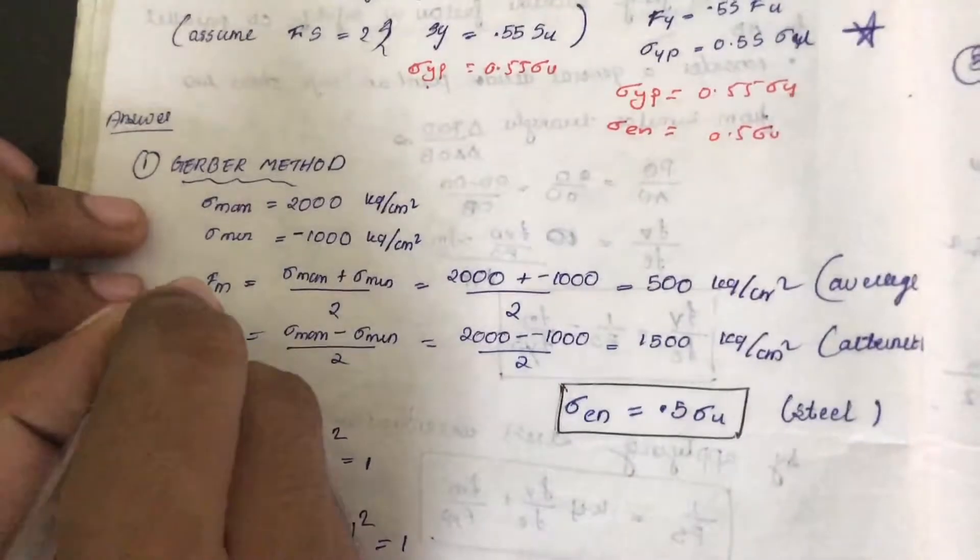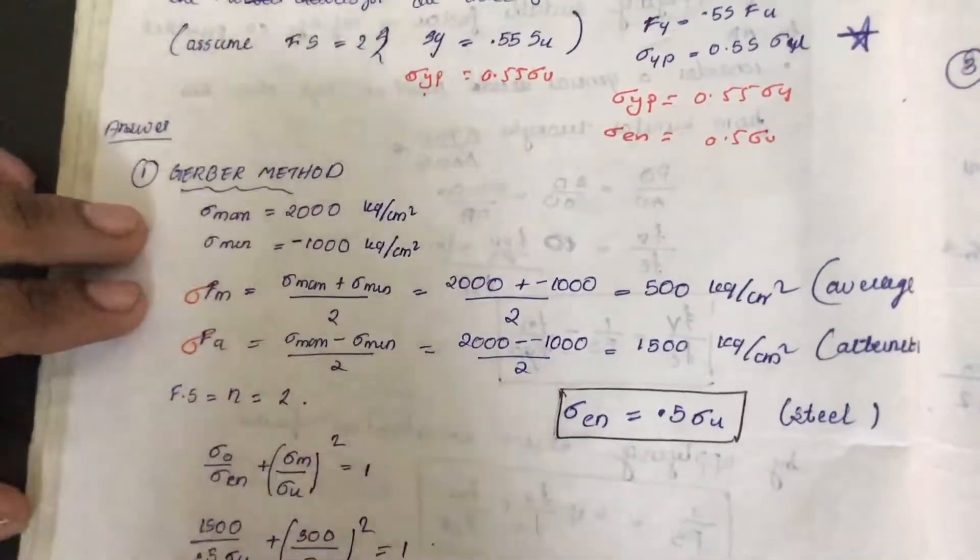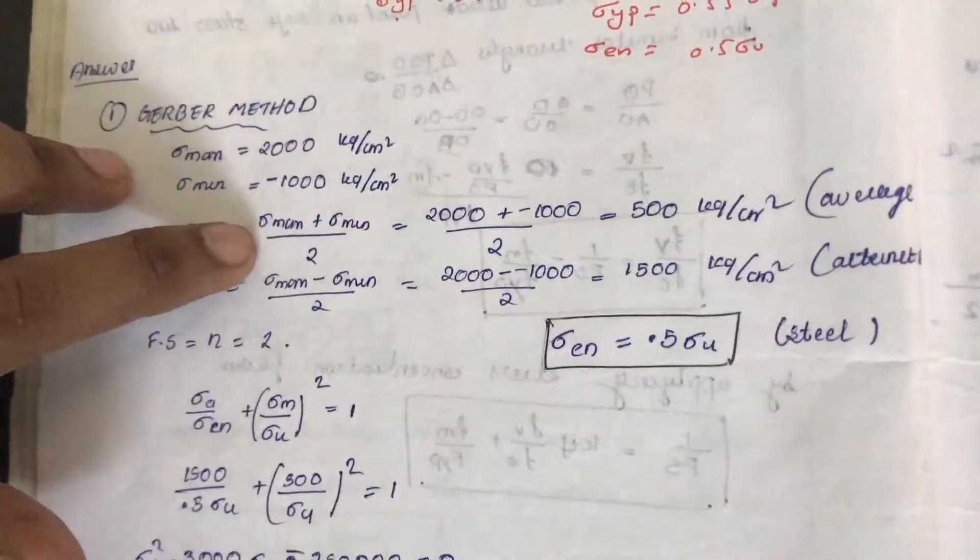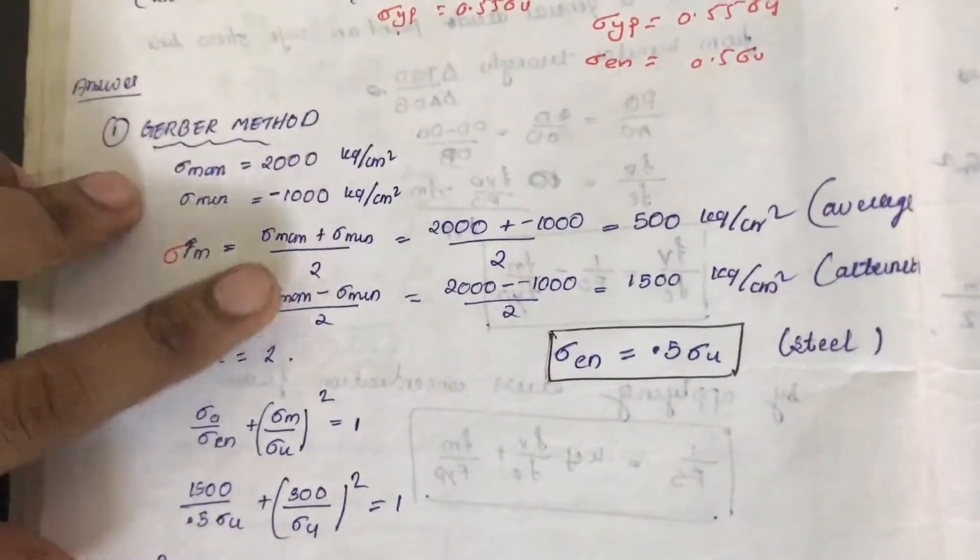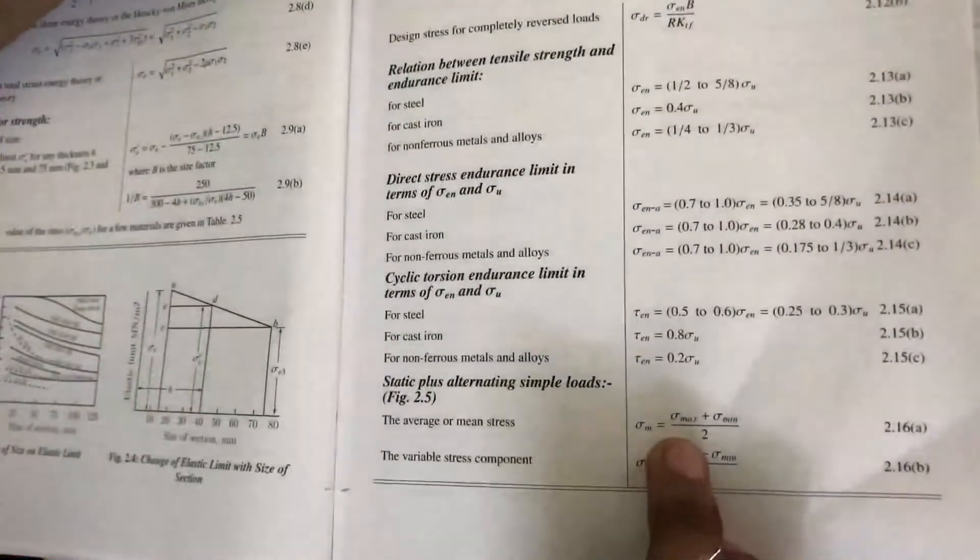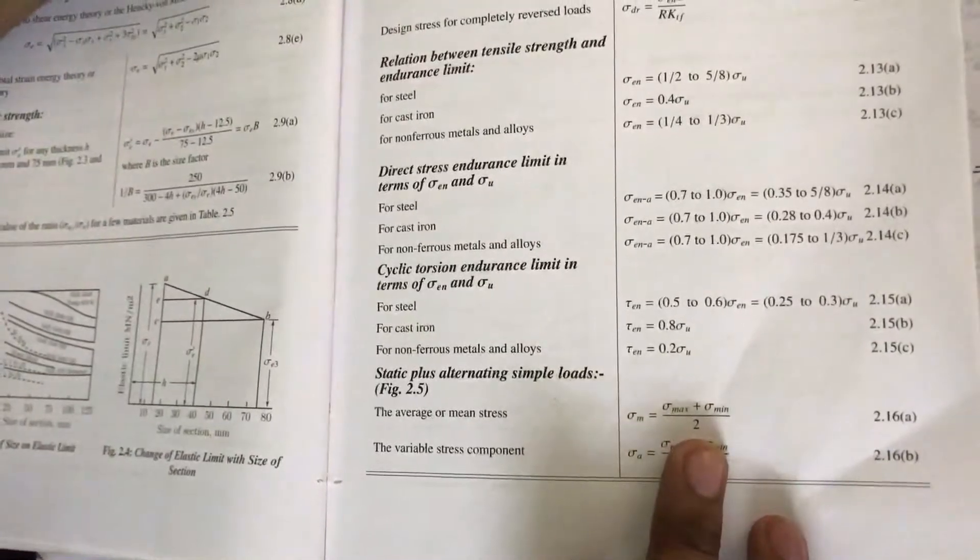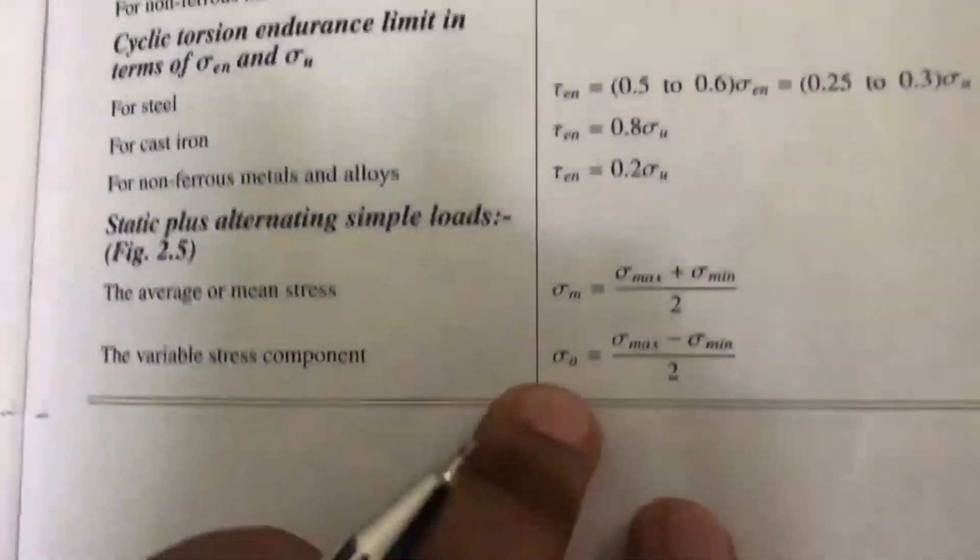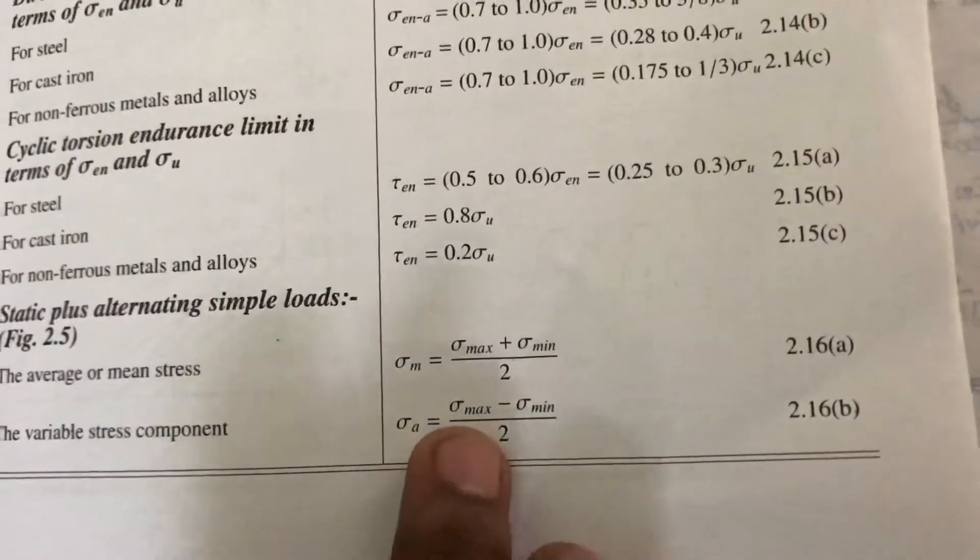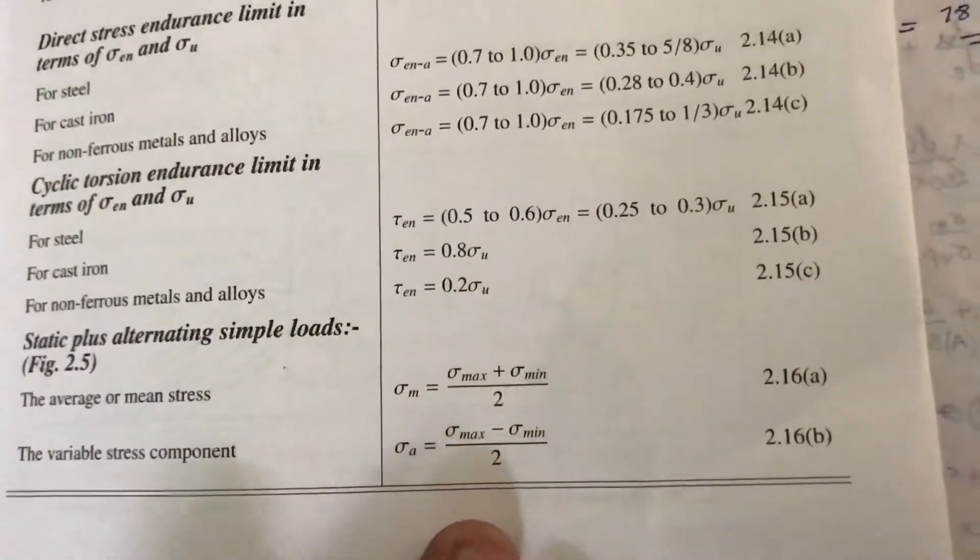Now we want to find sigma mean and sigma alternate. Sigma mean is sigma max plus sigma minimum by 2. Either you can learn the formula or it's given in the data book. That is sigma average. Sigma a stands for sigma alternate, equal to sigma max minus sigma minimum by 2.